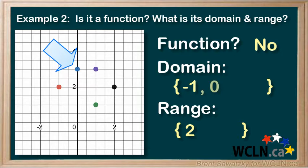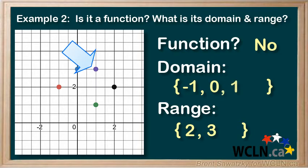This point is at x equals 0 and y equals 3. So the x goes into the domain list and the y value goes into the range list. This point is at x equals 1 and y equals 3. The x goes into the domain list.